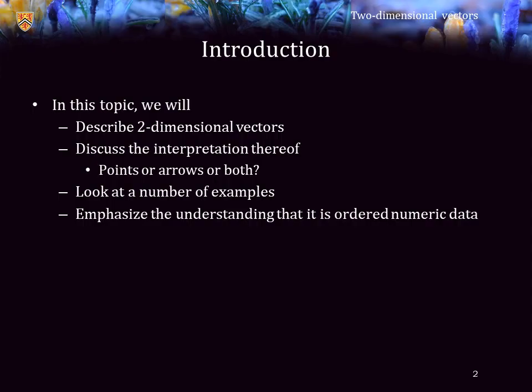In this topic, we're going to describe two-dimensional vectors. We will discuss the interpretation thereof. Are they points, arrows, both, neither? We'll look at a number of examples and different interpretations. We will emphasize the understanding that it is, most importantly, ordered numeric data.